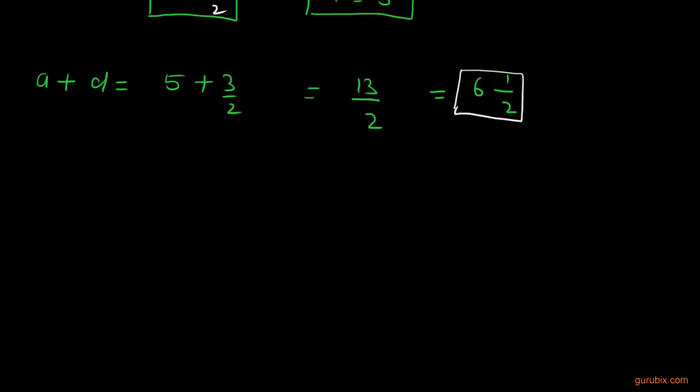Now we have to find out the third term and third term is equal to a plus 2d. This means 5 plus 2 into 3 over 2. Now we can cancel out this 2 with this 2. We get 5 plus 3 which means 8. So this is what we have to fill in the second box.